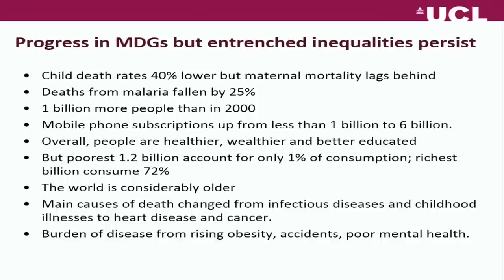Things have changed enormously — there are now six billion mobile phone subscriptions, compared with one billion when the MDGs started. Overall, people are healthier, wealthier, and better educated, but the poorest 1.2 billion account for only 1% of consumption while the richest billion consume 72%, so vast inequalities remain. The main causes of death have also shifted because the world has got older, and disease burden is now much more about chronic diseases like heart disease, cancer, and obesity, rather than infectious diseases.